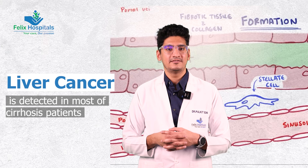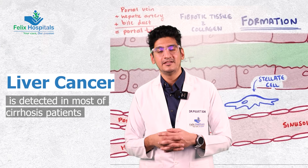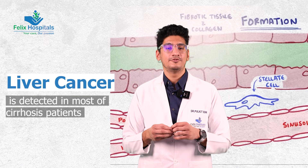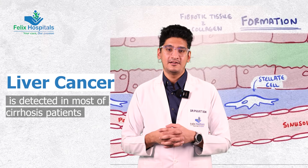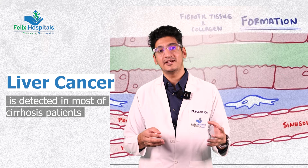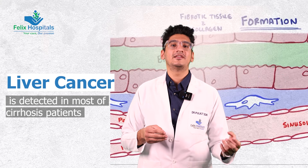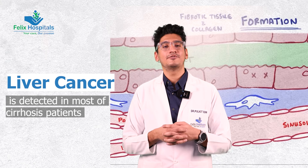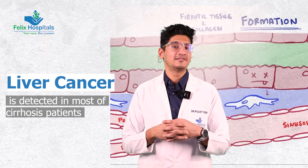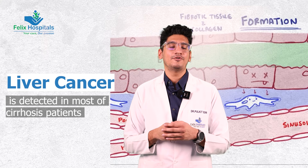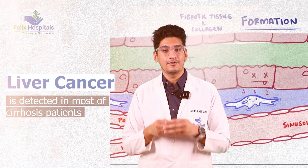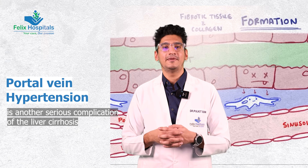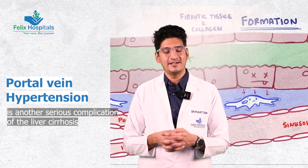A dreadful complication is the development of hepatocellular carcinoma, a type of liver cancer which can occur in cirrhosis and can be detected on ultrasound. A nodule in the liver can be confirmed using triple-phase CT abdomen and contrast MRI abdomen, even at a very early stage. This allows clinicians to detect HCC early, when it can be treated well.